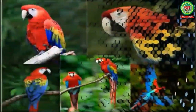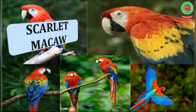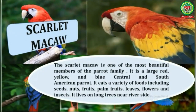Number four is Scarlet Macaw. The Scarlet Macaw is one of the most beautiful members of the parrot family. It is a large red, yellow, and blue Central and South American parrot. It eats a variety of foods including seeds, nuts, fruits, palm fruits, leaves, flowers, and insects. It lives on tall trees near the riverside.